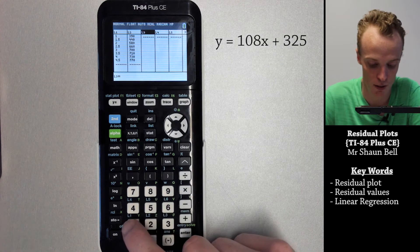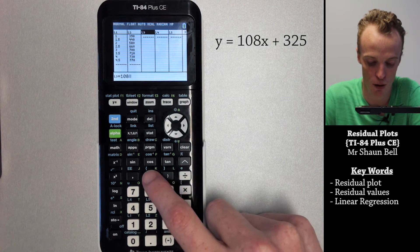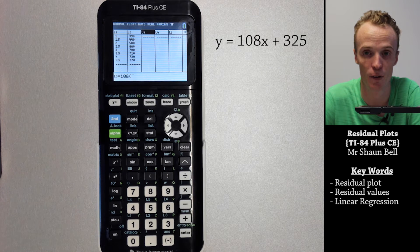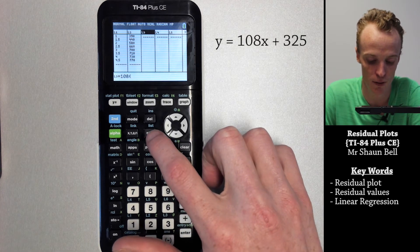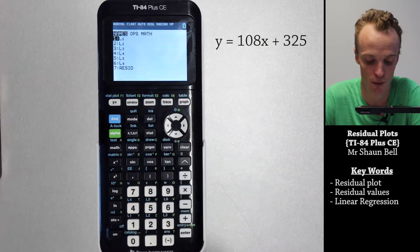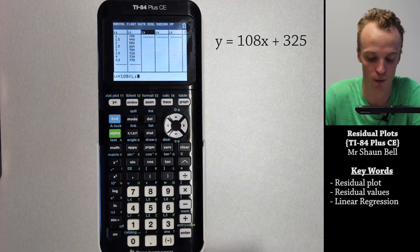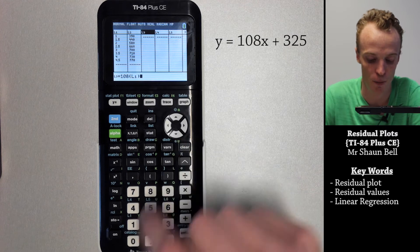So my equation is 108 multiplied by my x value which in this case is list one. To do that you'll see list in blue here, so you hit second then list and select list one and close that bracket.